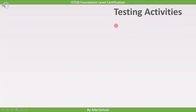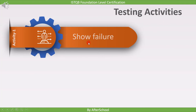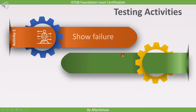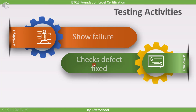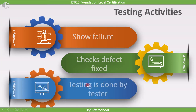First, we will have a look into testing activities. The most important activity of testing is to show failure, because one of the objectives of testing is to find defects. Finding defects is not the only activity of testing. Another activity is, once a defect is found, it is very much required to check if the found defect is fixed or not. And the last point is testing is done by testers.